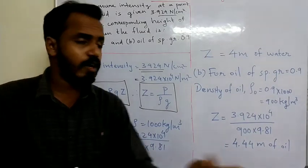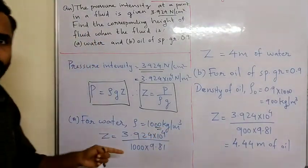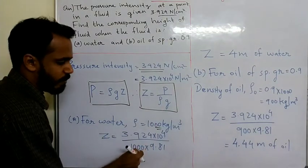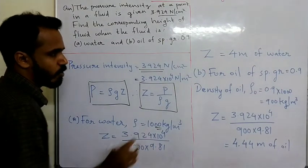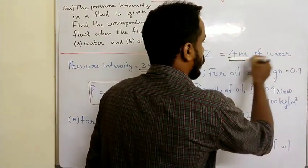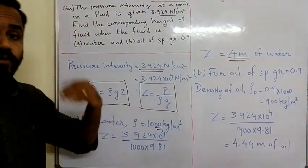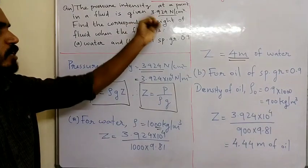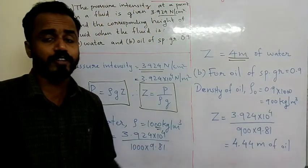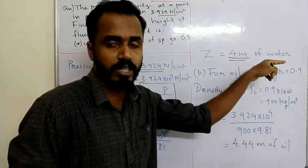For water, using density 1000 kg/m³: Z = 39,240 / (1000 × 9.81), which gives a height of 4m of water.